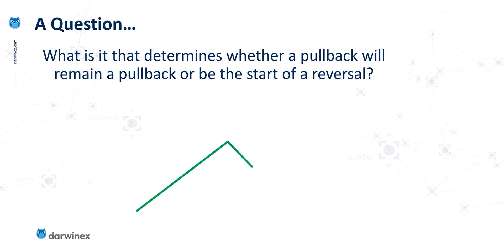So let's start with a question. What is it that determines whether a pullback will remain a pullback or actually be the start of a reversal? It's a fundamental question and something we can have no certainty over. However, taking a probability-based approach, we can start to make a judgment about what we think will happen next.